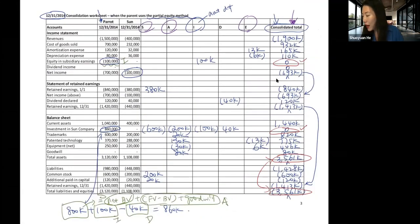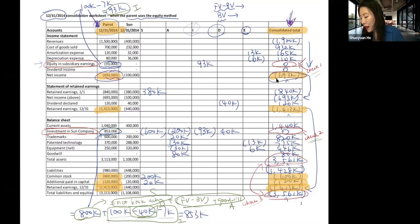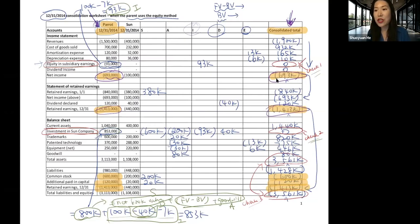It is only under the equity method that the parent book has some representation of the consolidated totals. Under the equity method, the parent book will more closely reflect consolidated total numbers. Specifically, the parent's net income will be exactly the same as consolidated total net income, and retained earnings will be exactly the same as consolidated total retained earnings. These equalities only hold when the parent has been using the equity method.